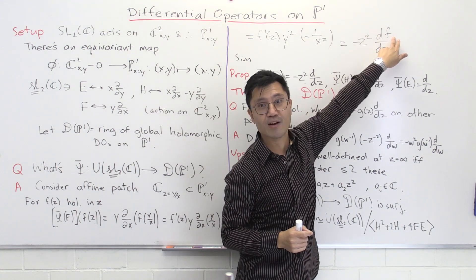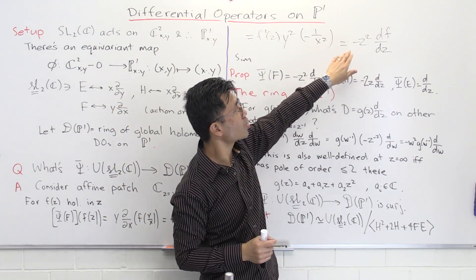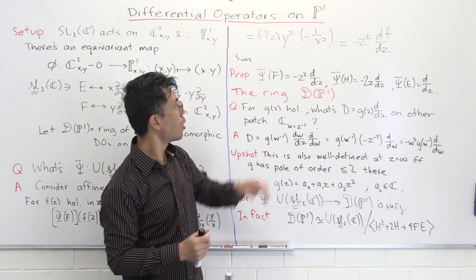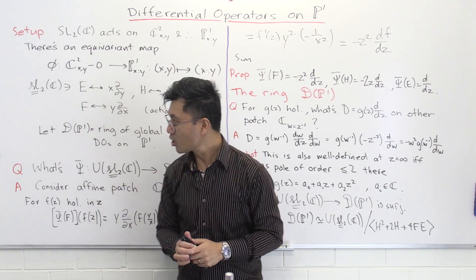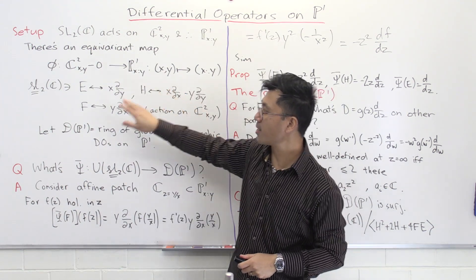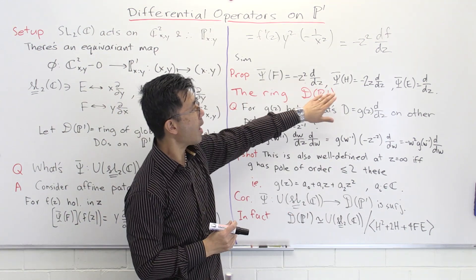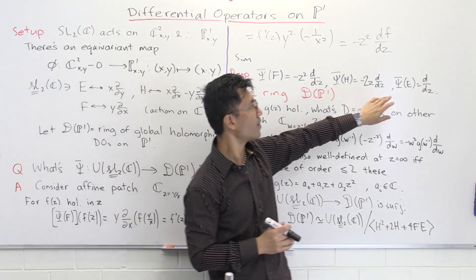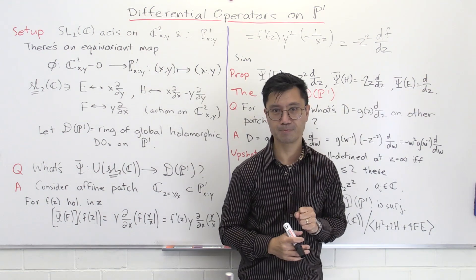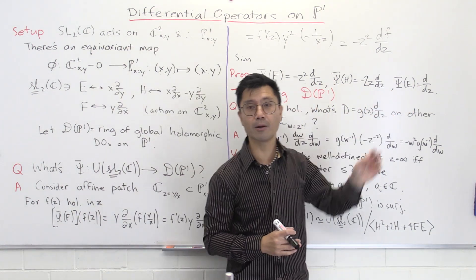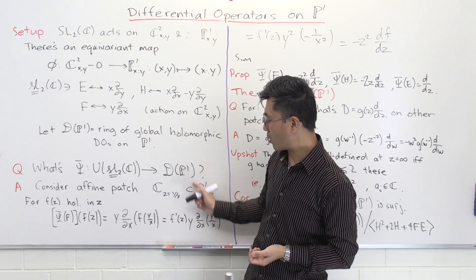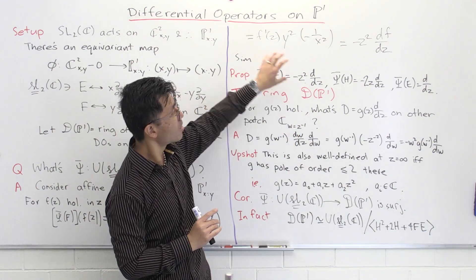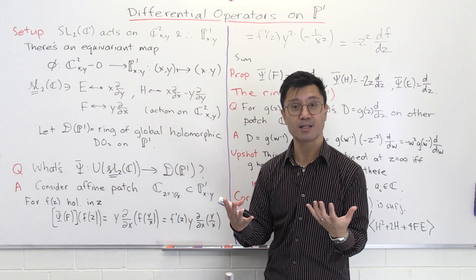So the image of F under psi is the differential operator −Z² d/dz. You can do similar computations for the other basis elements. The results are: psi(H) = −2Z d/dz, and psi(E) = d/dz. These are very clearly differential operators on C(Z), and in fact they are global differential operators on P1, because that's how the theory is set up. So we now have an explicit description of this map psi.